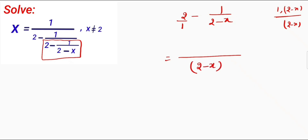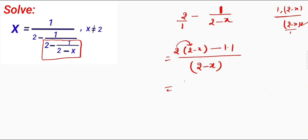So the first step is we have to divide 2 minus x by 1, which gives 2 minus x. Then we have to multiply this 2 with 2 minus x. Similarly, if I divide 2 minus x by 2 minus x I will get 1, then 1 multiplied by 1. So 2 multiplied by 2 gives 4.